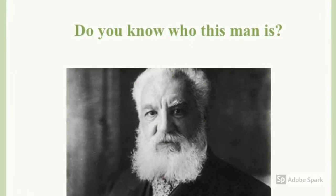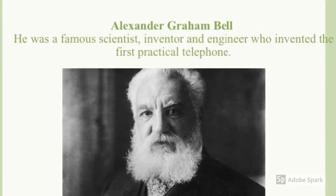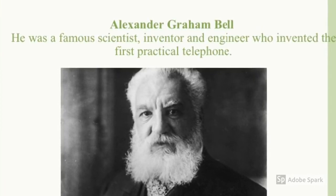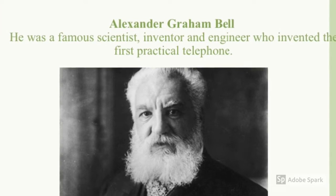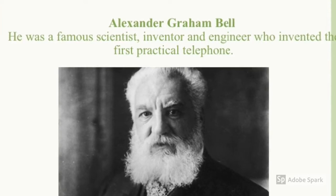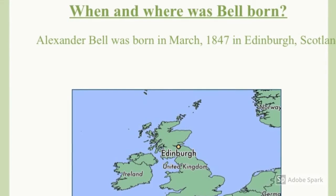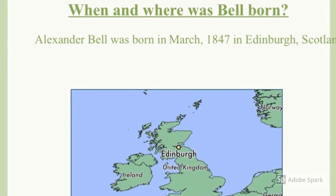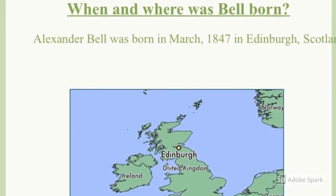Who is this man? Talk to your partner. His name is Alexander Graham Bell. He was a famous scientist, inventor and engineer who invented the first practical telephone. Alexander Bell was born in March 1847 in Edinburgh, Scotland.